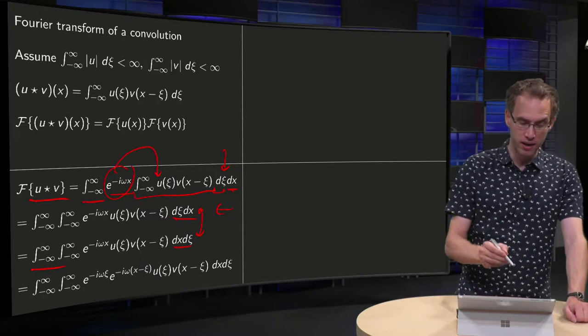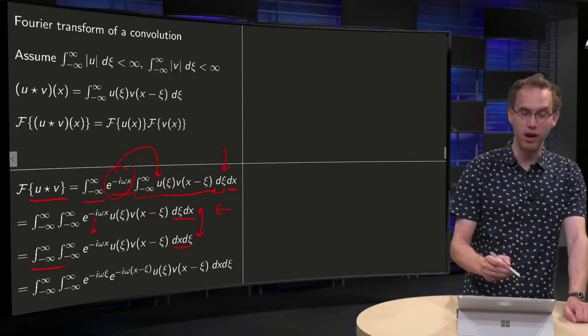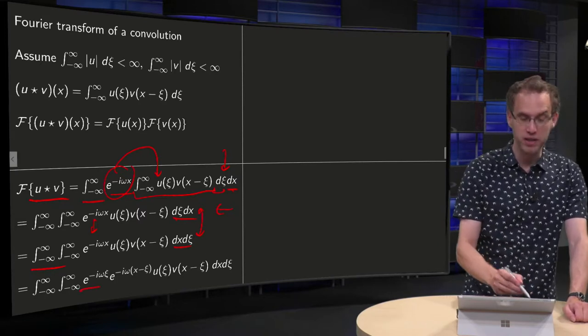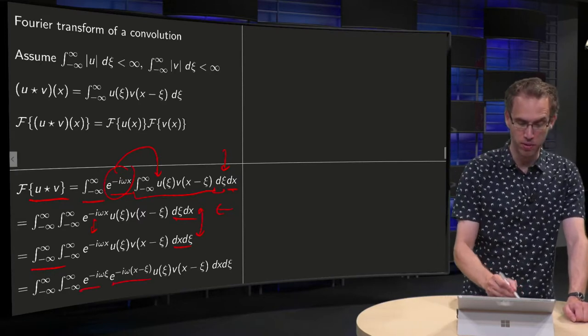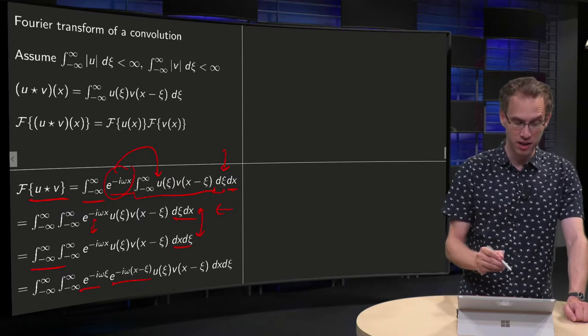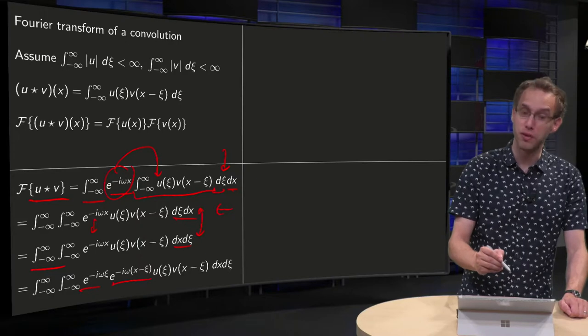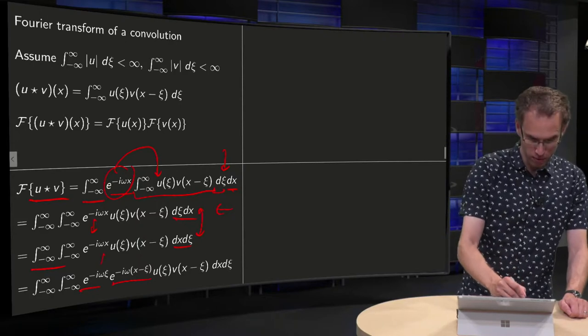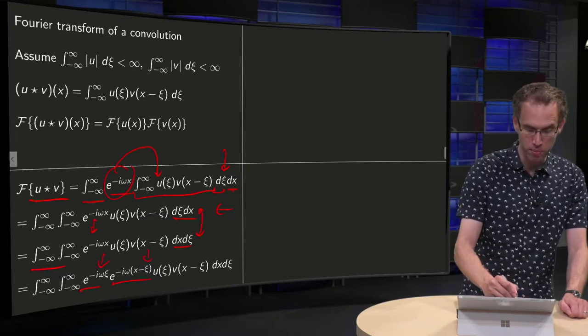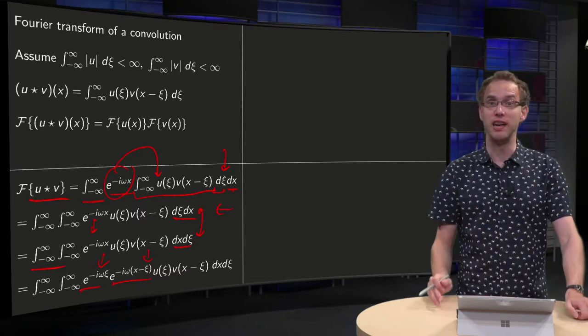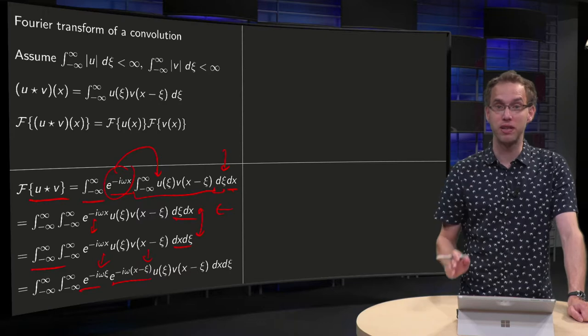Then we can rewrite this e to the power minus i omega x a bit. We can write it as e to the power minus i omega xi times e to the power minus i omega x minus xi. You see those additional factors we put in of e to the power minus i omega xi and e to the power plus i omega xi are cancelling out. So we are basically adding a multiplicative factor of 1.